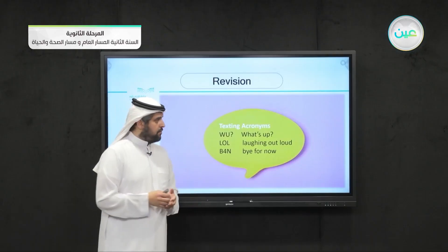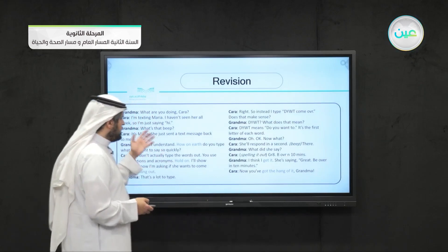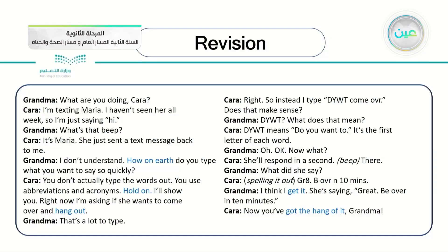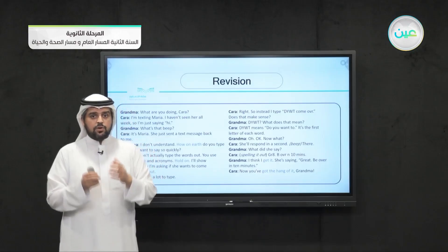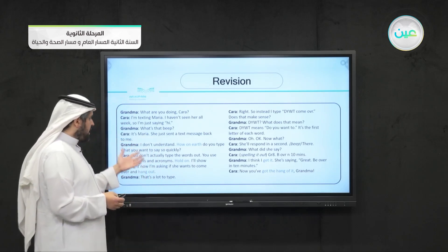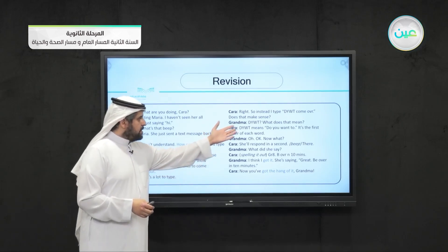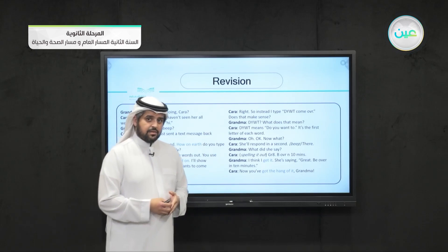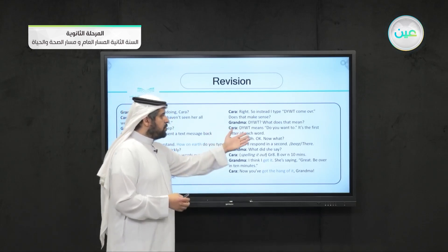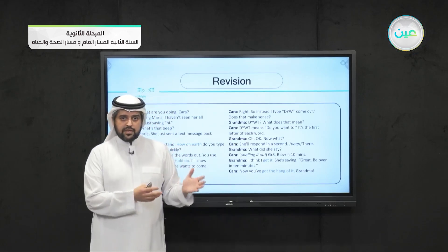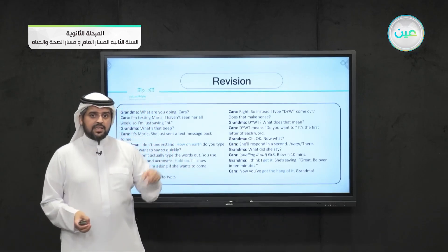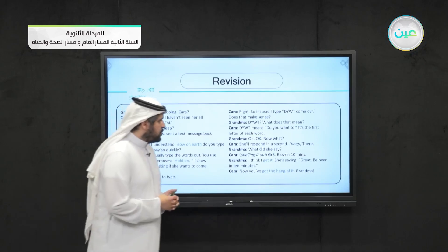Then we listened to a conversation between Cara and her grandmother. Cara is trying to teach her grandmother to use acronyms, because the grandmother was wondering how Cara finished her text so quickly. She answered that she is using acronyms. Then she learned the acronym D-Y-W-T, which stands for 'do you want to?'